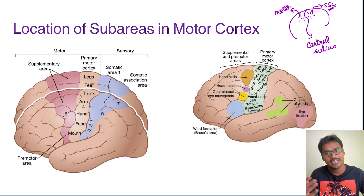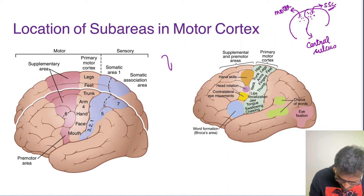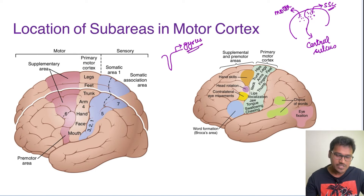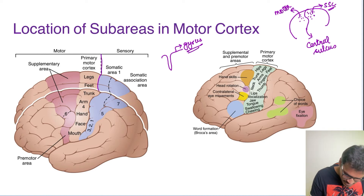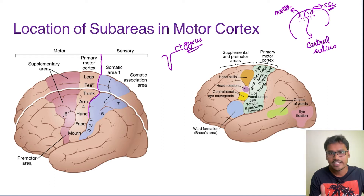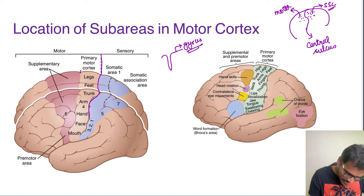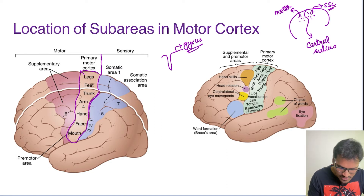Sulcus refers to depressions in the brain, called sulci, whereas the elevated portions are called gyri. The primary motor area is just in front of the central sulcus, and this elevation is called the precentral gyrus. Since it is an elevation, we call it a gyrus, and this is where the primary motor cortex is located.